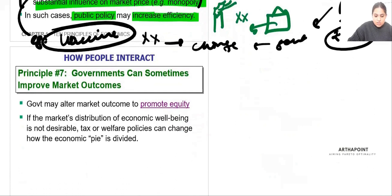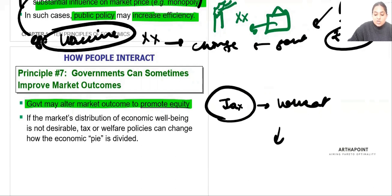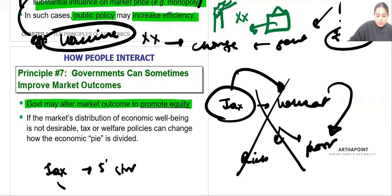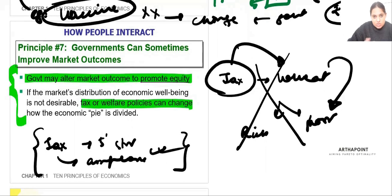Sometimes government may step in to bring equity. For example, a tax on wheat affects the poor who rely on it, making it a bad policy. But a tax on five-star hotels or airplane tickets is a good policy, because people who can afford those can also afford to pay the tax. Equity is what the government wants to bring through the right set of policies, charges, and taxes.